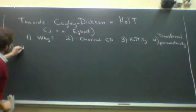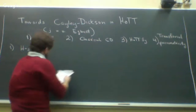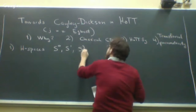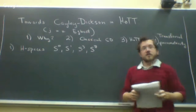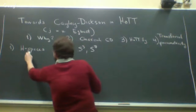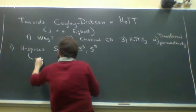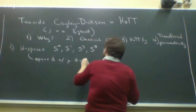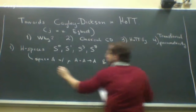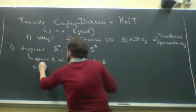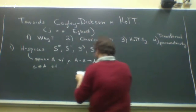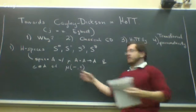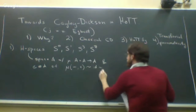The main thing we want is the H-space structure on the classical spheres. Those are S0, S1, S3, and S7. Recall that an H-space is just a space A with a multiplication and a neutral element such that multiplying by the unit is homotopic to the identity, and homotopic to multiplying with the unit on the other side.